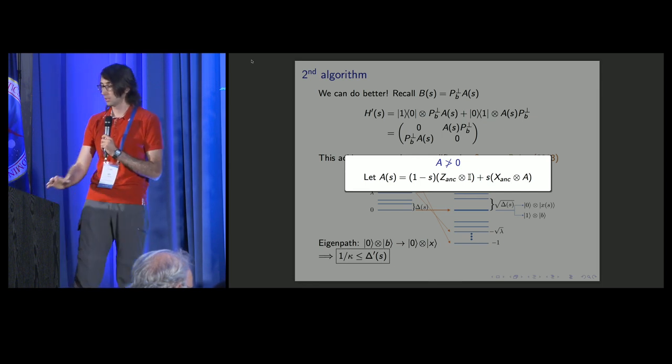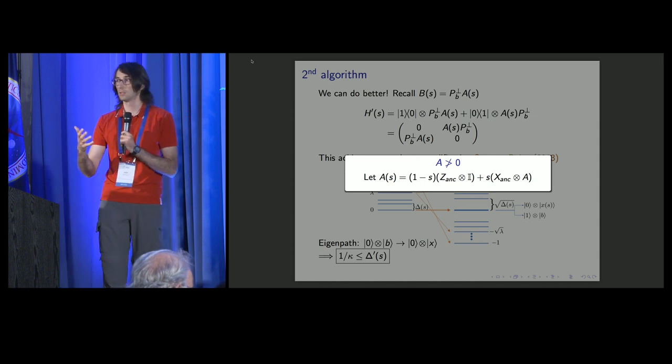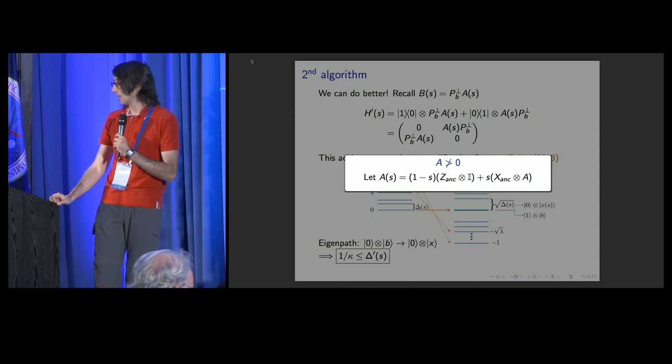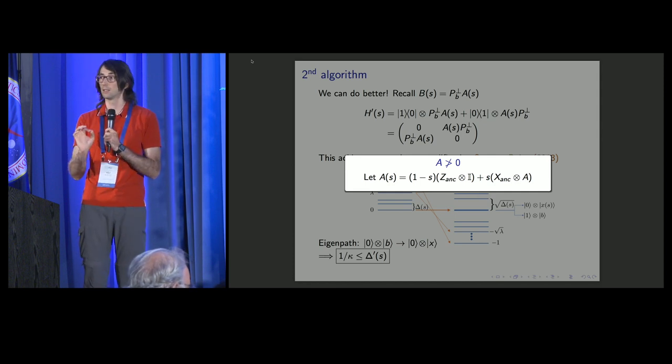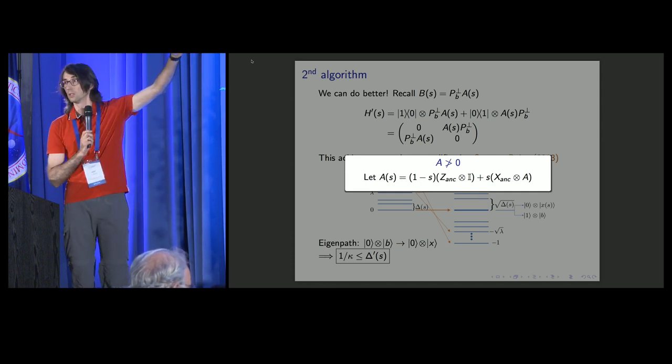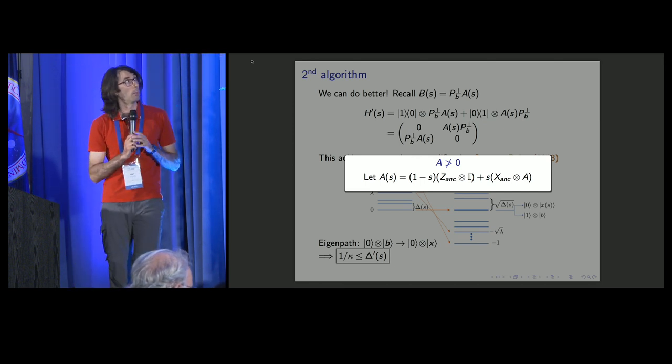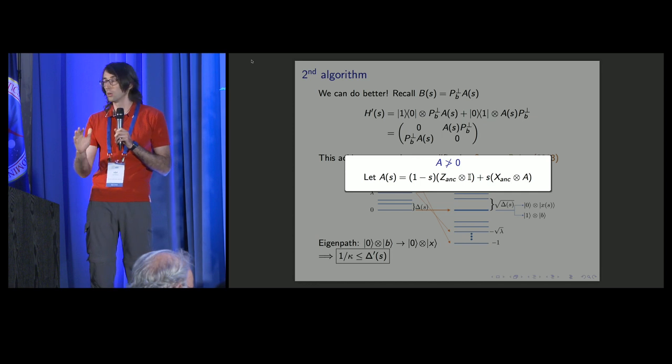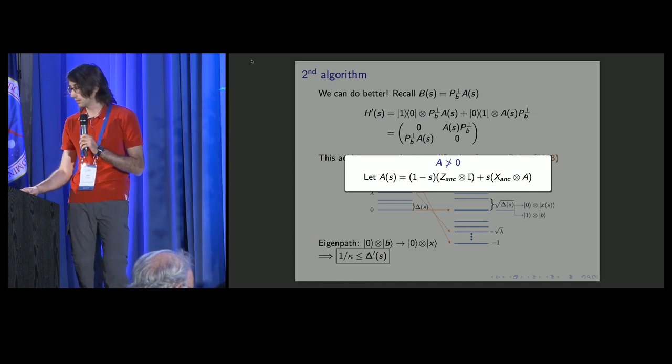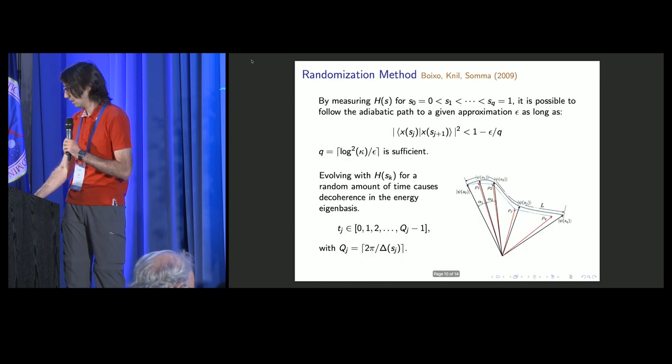Everything I told you up to this point can be generalized to matrices that are not positive. In that case, we need to add another ancilla qubit and replace all the occurrences of this interpolation A of S with this form where we tag along Pauli X and Z operators on the new ancilla qubit.